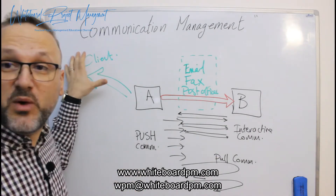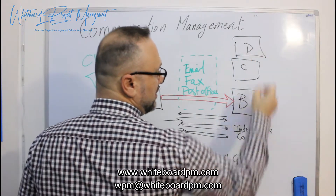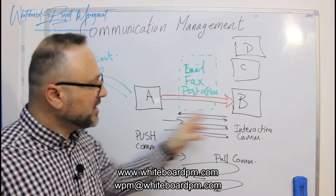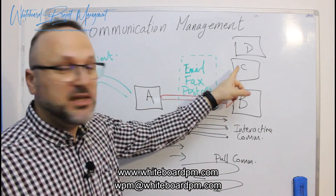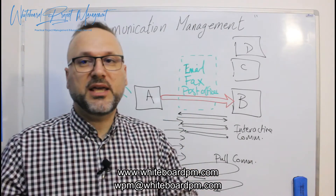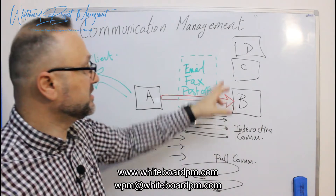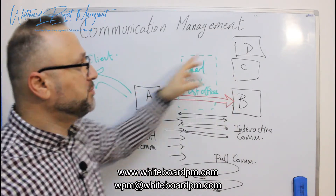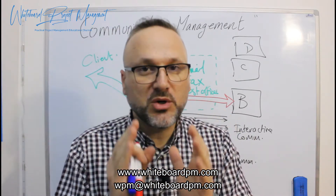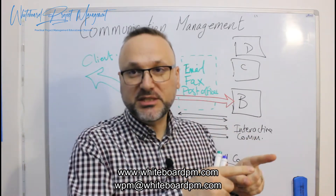Your client is waiting for information from you, but you have many team members to communicate with. As a project manager, when you are interacting with Person B, another Person C might use pull communication — they have the information but could be a lazy person or have so many tasks they have no time to send emails. You may push information to Person D. You use different communication methods with each person — this is your responsibility as a project manager.